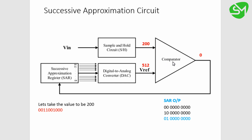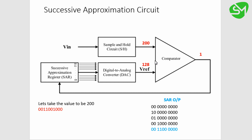Now 512 is greater than 200, so the comparator output is 0. This 0 replaces the current MSB in the SAR and the 1 shifts right by one bit, giving 0100000000, which is 256. Again 256 is greater than 200, so the comparator outputs 0, and the 1 shifts right again giving 0010000000 — that is 128. The SAR continues iterating and 128 is fed to the comparator non-inverting terminal.